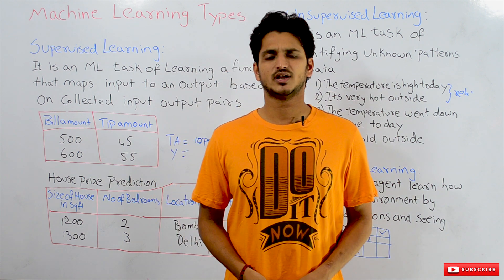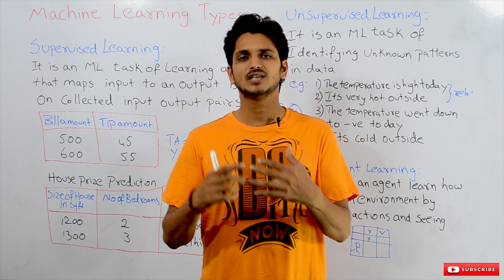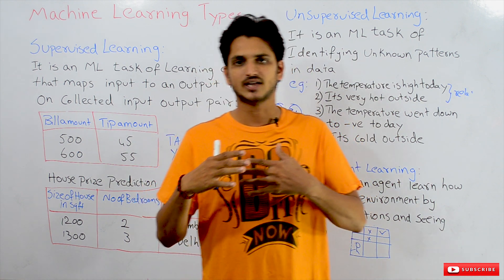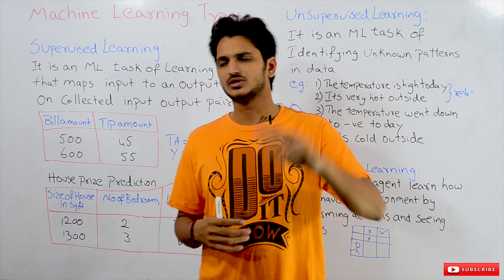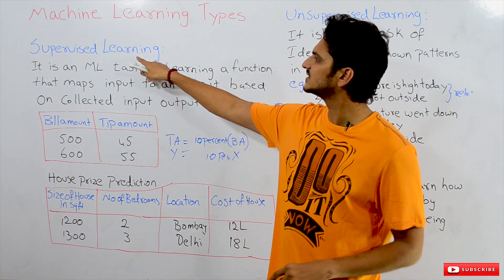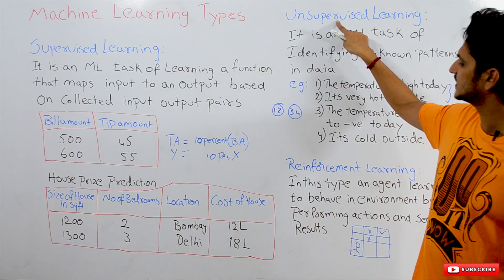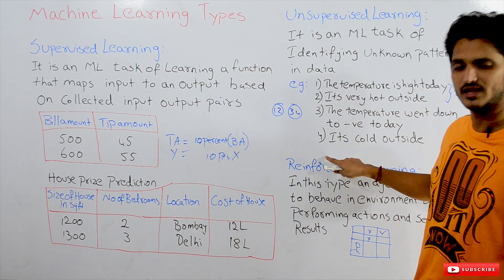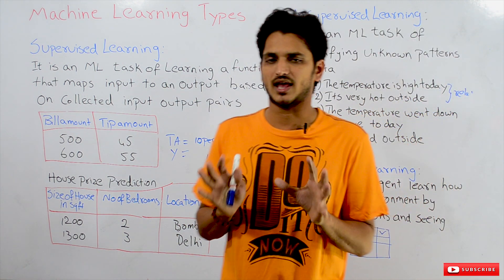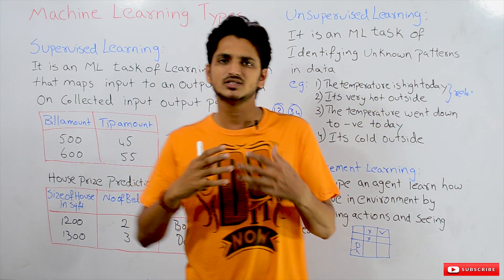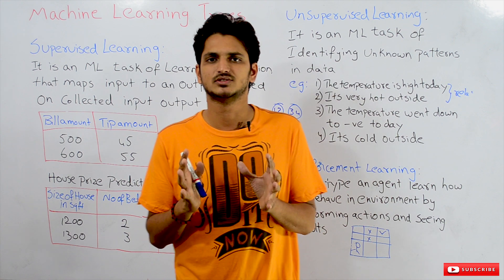Hi, welcome to Learning Monkey. In this class we will discuss about machine learning types. There are three types: supervised learning, unsupervised learning, and reinforcement learning. For better understanding of this class, we have to understand what machine learning is.